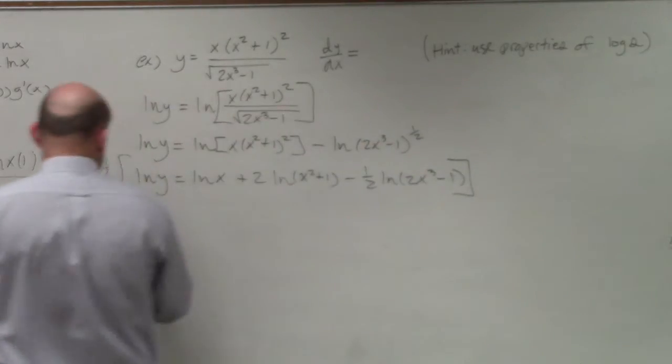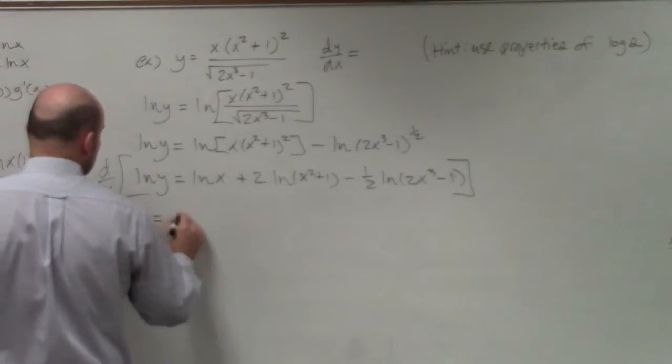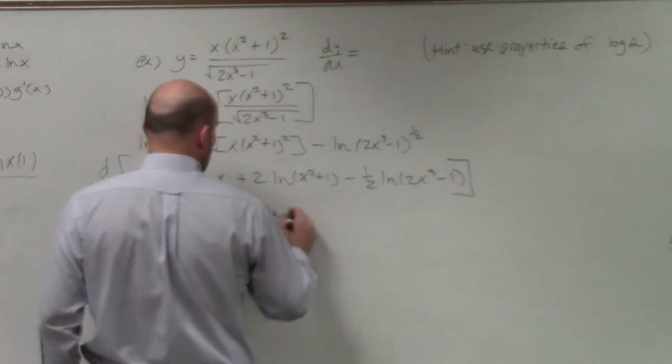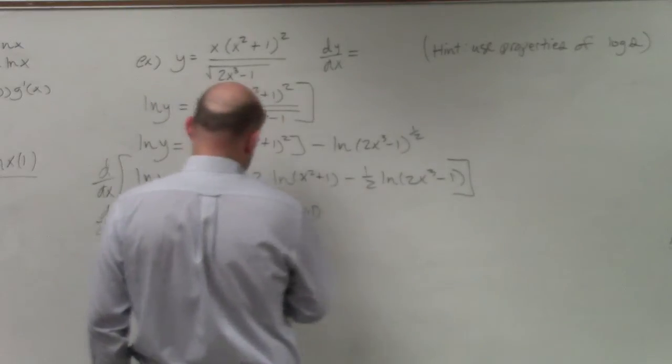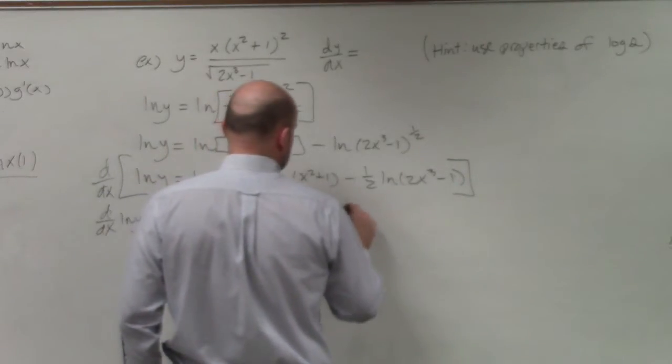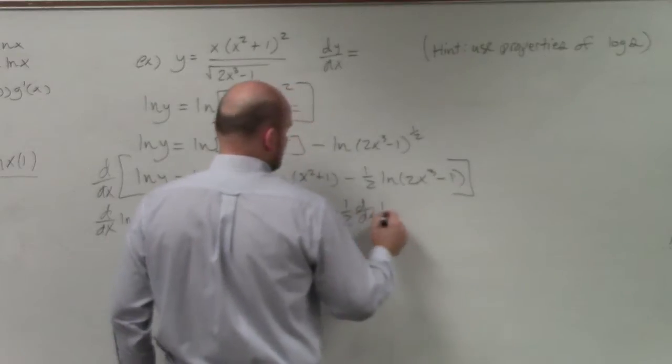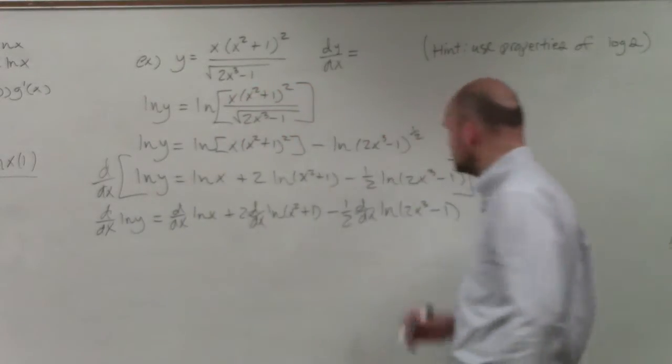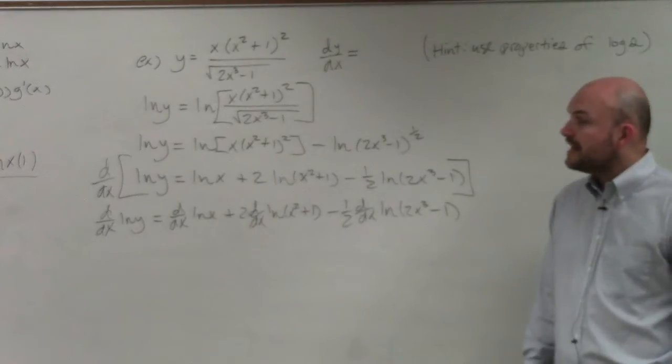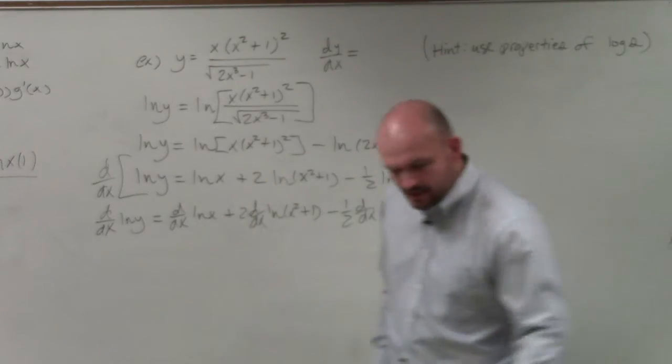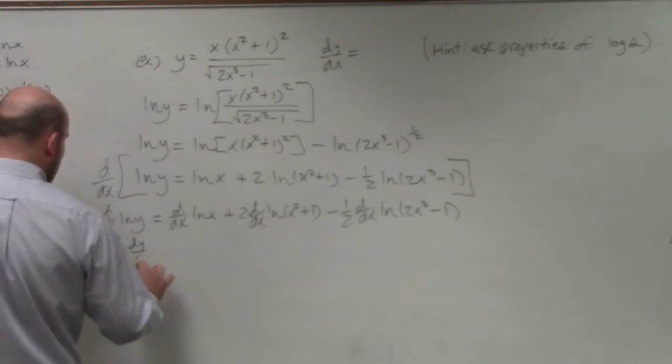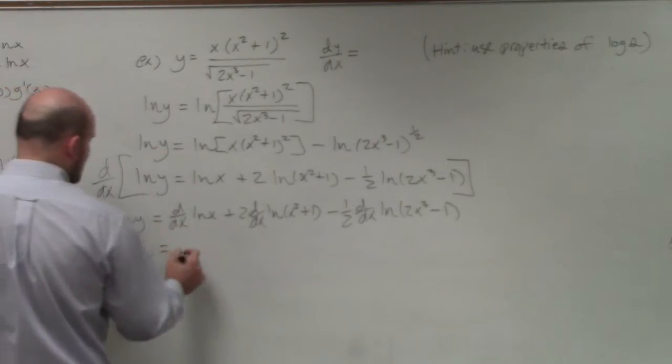And basically, what we're doing is now taking d/dx of ln of y equals d/dx of ln of x, plus d/dx of 2 ln of x squared plus 1. Actually, let's get the 2 out of there. So now, as we go ahead and take the derivative, what we have over here is going to be 1 over y dy/dx. Over here, we're just going to have 1 over x.